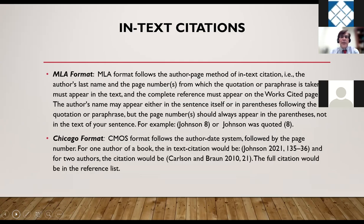MLA format follows the author-page method of in-text citation. You use the author's last name and the page number from which the quotation or paraphrase is taken. This must appear in the text, and the complete reference must appear in the works cited page. The author's name may appear either in the sentence itself or in the parenthetical that follows, but the page number should always appear in parentheses — for example, Johnson 8 means you're quoting from Johnson, page 8. For Chicago Manual style, the author-date system gives you, for example, Johnson 2021, with a comma between the year and page number.